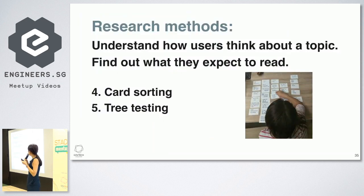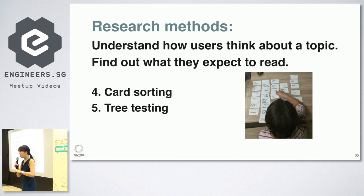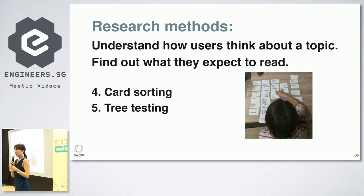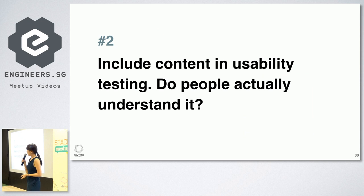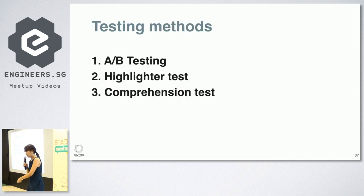Other research methods: we have to understand how users think about a topic and find out what they expect to read. For those of you in UX, you might be familiar with card sorting and tree testing. We actually write down the titles and the topics, then we get users to group them and tell us what they expect the layout to be. We do it in such detail that for every article there will be H2 headers, so we find out the sequence that they expect the information or instructions to be delivered to them. We also include content in usability testing — do people actually understand the content that we write? There's A/B testing, both qualitative and quantitative depending on the type of content being tested, as well as highlighter tests and comprehension tests.